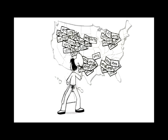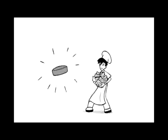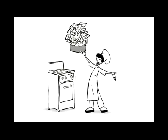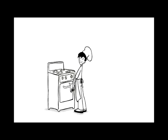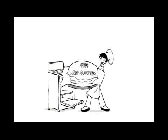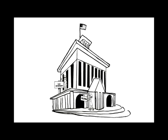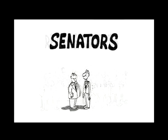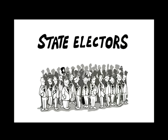One argument for the Electoral College is that by requiring a distribution of popular support, it makes sure that states with large populations don't have an unfair advantage. No one region of the United States provides enough electoral votes to win the presidency, so a candidate must gather support from a broad range of states. Supporters also argue it maintains the federal system of representation: the House represents states by population, the Senate represents each state equally, and the Electoral College represents each state's choice for the presidency.